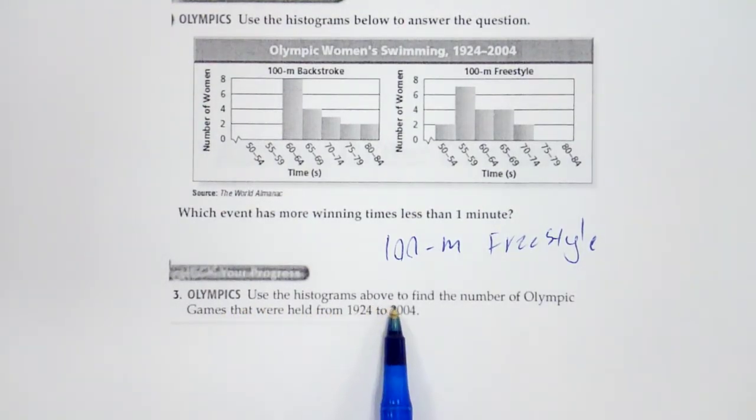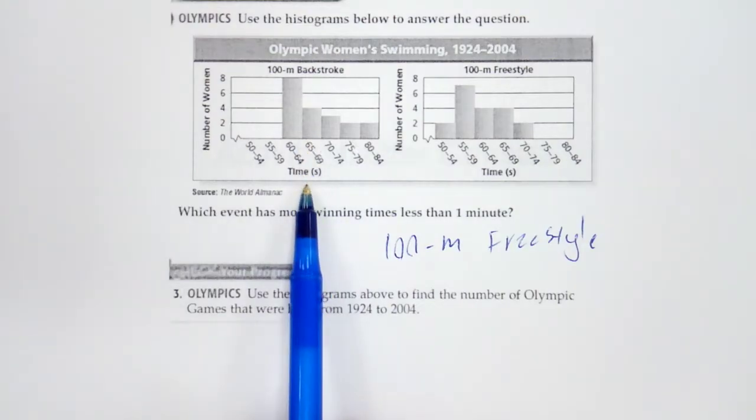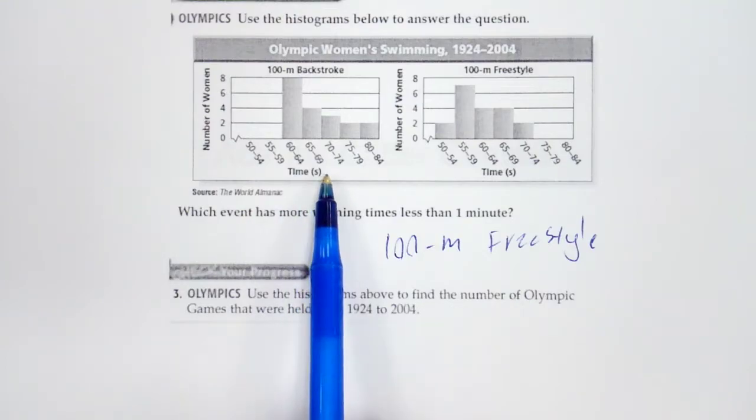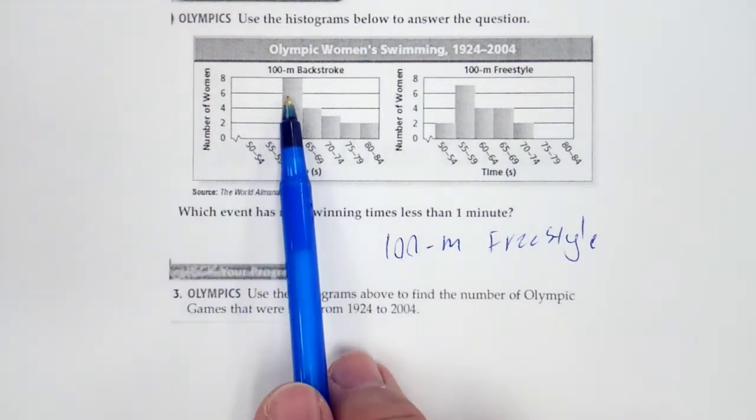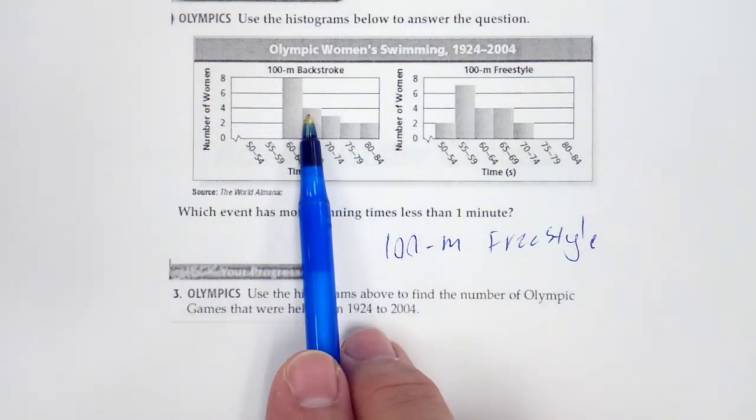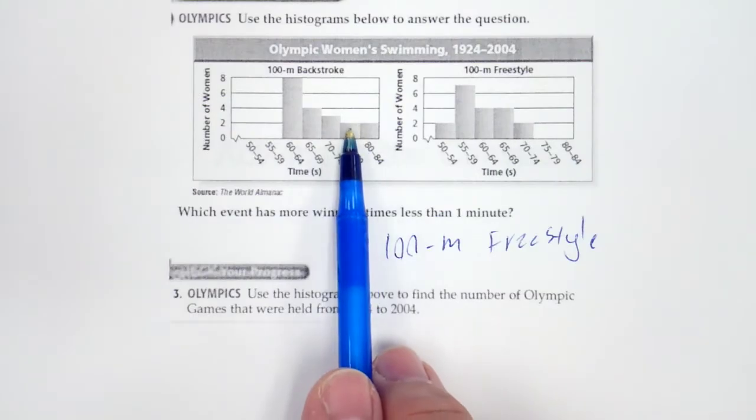Use a histogram above to find the number of Olympic games that were held from 1924 to 2004. Okay, so each one of these represents the Olympic games. So we have 8, 4, 3, 2, and 2.